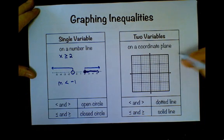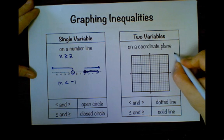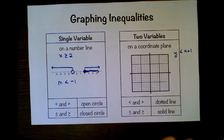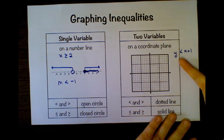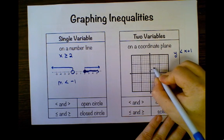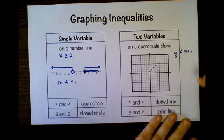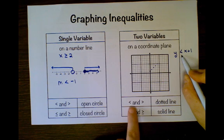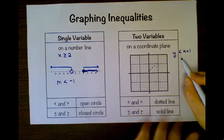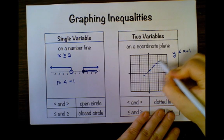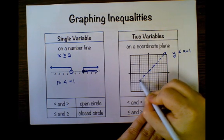All right, now as far as two variables, you would graph that on a coordinate plane. So if I had, for example, y is less than x plus one, what I would do is I would pretend that I'm graphing the line y equals x plus one. So I begin at one and I would go up one over one, up one over one, and I draw a bunch of dots so that I can connect my dots. But I would then look at my inequality symbol, and since this is strictly less than, I'm going to connect this with a dotted line, sort of like that. You'll learn that I'm really bad at drawing lines, so that's pretty good for me.